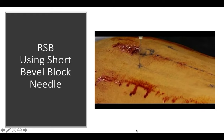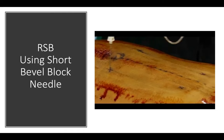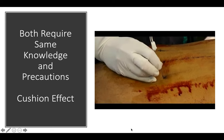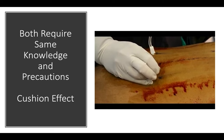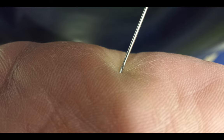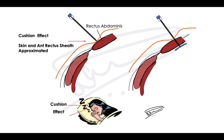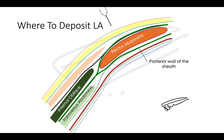Another rectus sheath technique uses a short-bevel needle — it's about feeling the bounce and pop. An important concept is the cushion effect when going through the skin, which is a tough structure. A blunt needle can indent the skin significantly without penetrating. You might cushion through the skin and anterior rectus sheath and start feeling bounce on the posterior rectus sheath, thinking that is your first goal — if you inject there, you will be in the abdomen. Remember the cushion effect: local anesthetic in the rectus sheath is deposited over the posterior rectus wall without going through it.